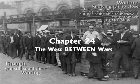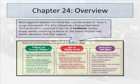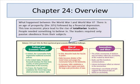This is Chapter 24, The West Between Wars. Here's an overview of what happened between World War I and World War II. There was an age of prosperity in the 20s, followed by financial depression in the 30s. This low economic place led to the rise of totalitarian leaders — people who needed something to believe in believed in these leaders.